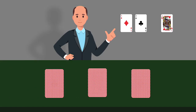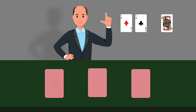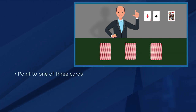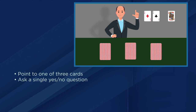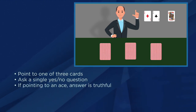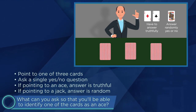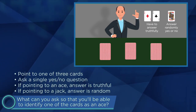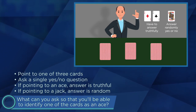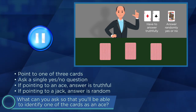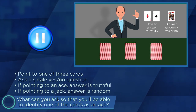Here's the first of those puzzles. Imagine that I place two aces and a jack face down on the table in a row. I know which card is which, but you don't. Your task is to point to one of the three cards, and then to ask me a single yes-no question. I stipulate in advance that if you're pointing to an ace, then I'll answer your question truthfully, but if you're pointing to the jack, then I'll answer either yes or no completely at random. What can you ask me so that, based on my answer, you'll be able to definitely identify one of the cards as an ace? This puzzle has a similar flavor to those from our last lesson — you might want to pause the video here to work out this puzzle.